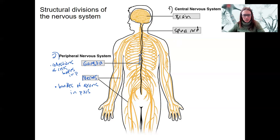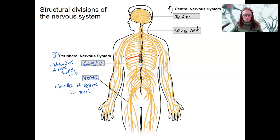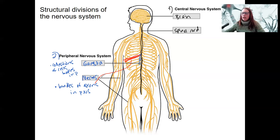Inside each of those circles are cell bodies of neurons, also neuroglia — but we're not really talking about neuroglia right now. Each little cell body of a neuron has an axon projecting from it. Multiple axons come from multiple neurons in one ganglion. One ganglion contains multiple cell bodies; one nerve contains multiple axons.